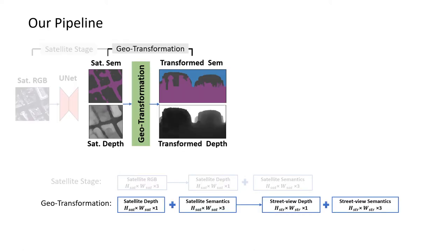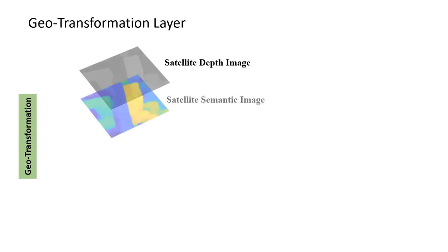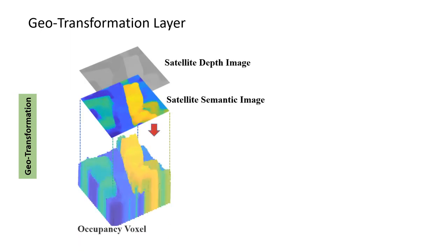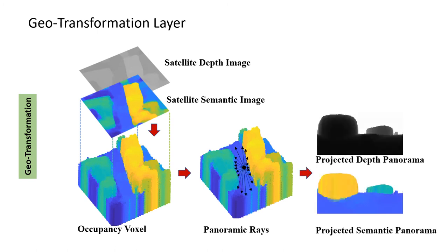For the geotransformation stage, the satellite depth and semantic images are transformed to the street view in a differentiable way. More specifically, the satellite depth image is projected into a 3D occupancy voxel grid. The street view panorama is then generated by traversing panoramic rays from the grid center in various directions.